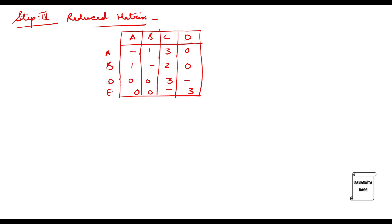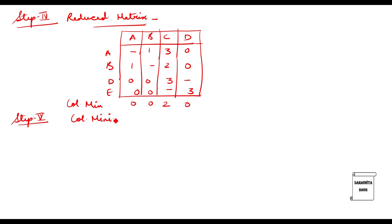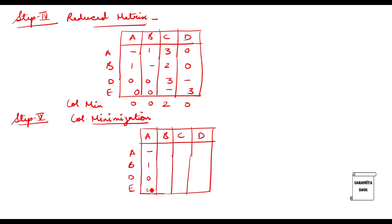I have not copied the penalty values. Now I'll go for row and column scanning. Checking for at least one zero in each row and column: this column does not have at least one zero — its minimum value is two. So I've calculated the column minimum. Step five requires column minimization. Row minimization is not required since there is already one zero in each row. I subtract two from the column with minimum two and copy the rest of the values.